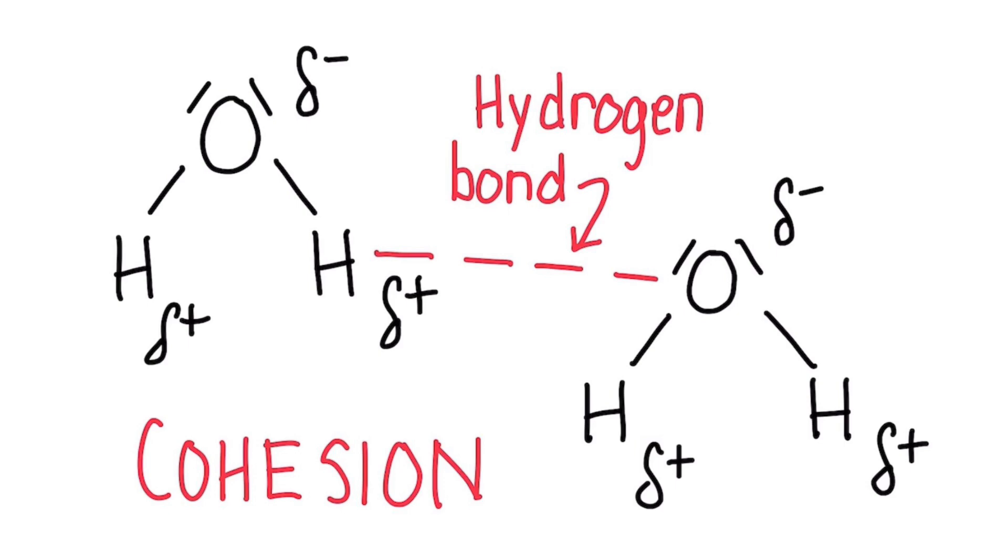Cohesion is when water molecules are attracted to one another as a result of their individual polar covalent bonding. Within each water molecule, the oxygen is slightly negative while the hydrogen is slightly positive. Therefore, the slightly positive hydrogen of one water molecule is attracted to the slightly negative oxygen of another, and they form a hydrogen bond. This is cohesion.